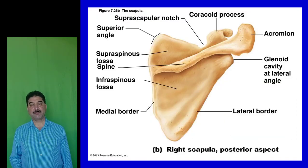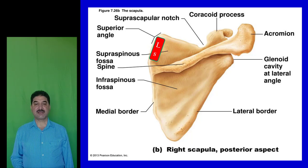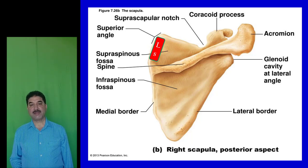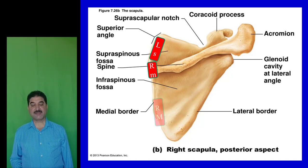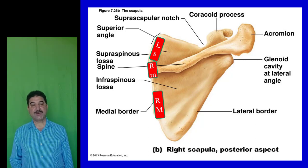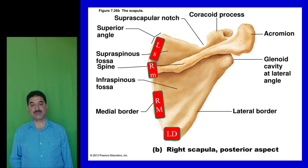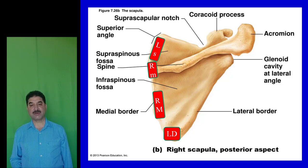The medial border of the scapula on the dorsal surface gives attachment to levator scapulae muscle above the spine, rhomboid minor muscle opposite to the root of the spine, and rhomboid major below the root of the spine. Remember: rhomboid minor rests on the shoulders of rhomboid major. The inferior angle of the scapula is crossed by latissimus dorsi, so it gives attachment to latissimus dorsi muscle.